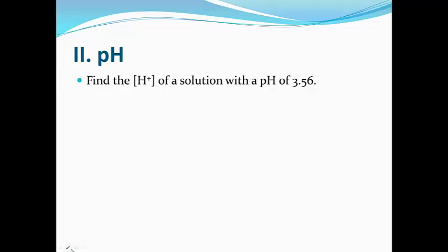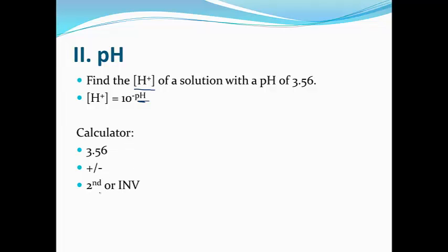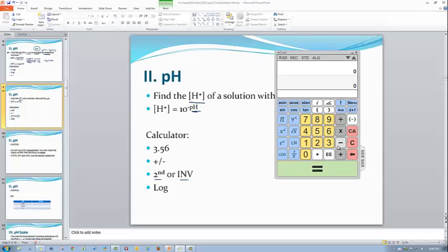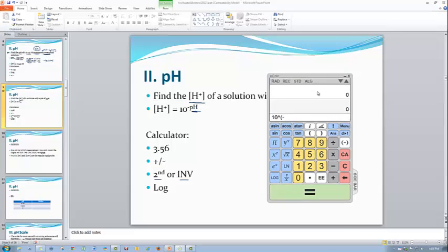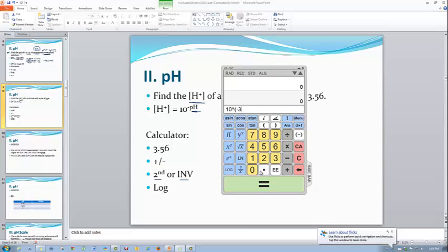How do you find the H-plus for a solution? The formula is 10 to the negative pH. If your calculator works backwards, enter the pH first — say 3.5, make it negative — then look above the log button for the second or inverse function. If yours works the normal way, use the Y-to-the-X key, then in parentheses enter the negative pH, such as negative 3.56, and push equals. There is the H-plus concentration.